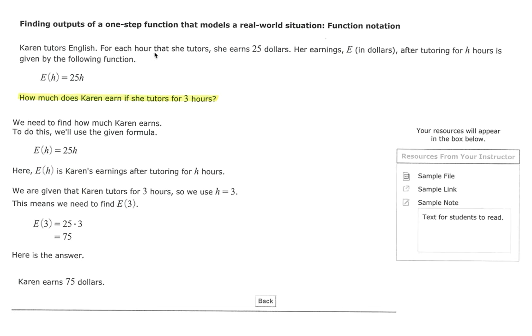Karen tutors English. For each hour that she tutors, she earns $25. Her earnings, E in dollars, after tutoring for H hours, is given by the following function: E of H equals 25H.